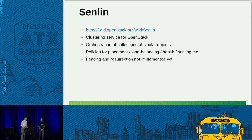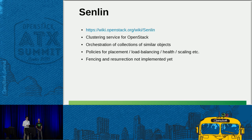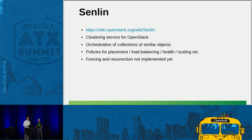Another approach is Senlin. Senlin is a clustering service for OpenStack designed to orchestrate collections of similar objects like Nova instances or Heat stacks. It has many policies for placement, load balancing, and scaling. During the Newton cycle the Senlin team is going to work hard on a health policy that will enable you to keep an eye on your cluster of VMs and automatically bring them back to life if something goes wrong. However, it's not done yet — so right now it's only promising, and you should keep an eye on this project, but it's not usable right now.